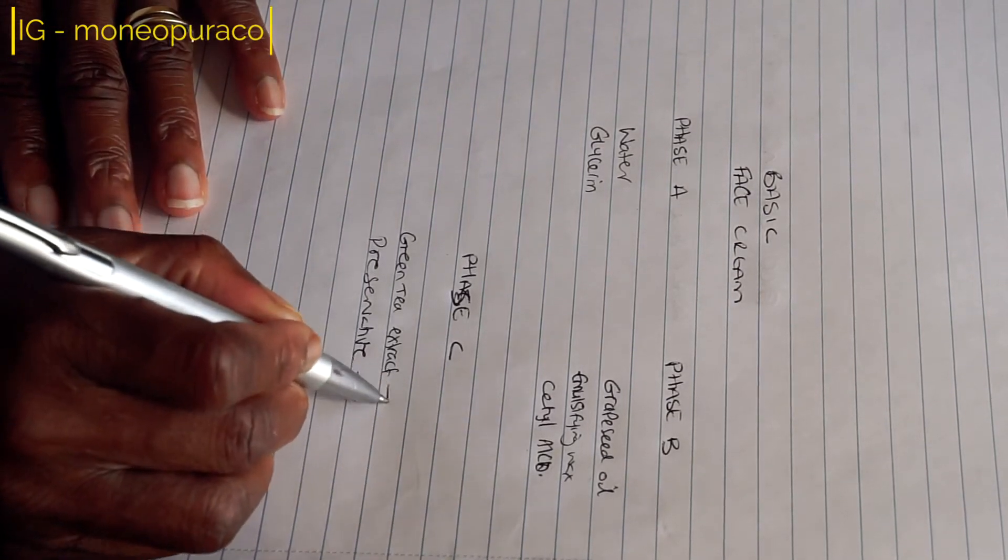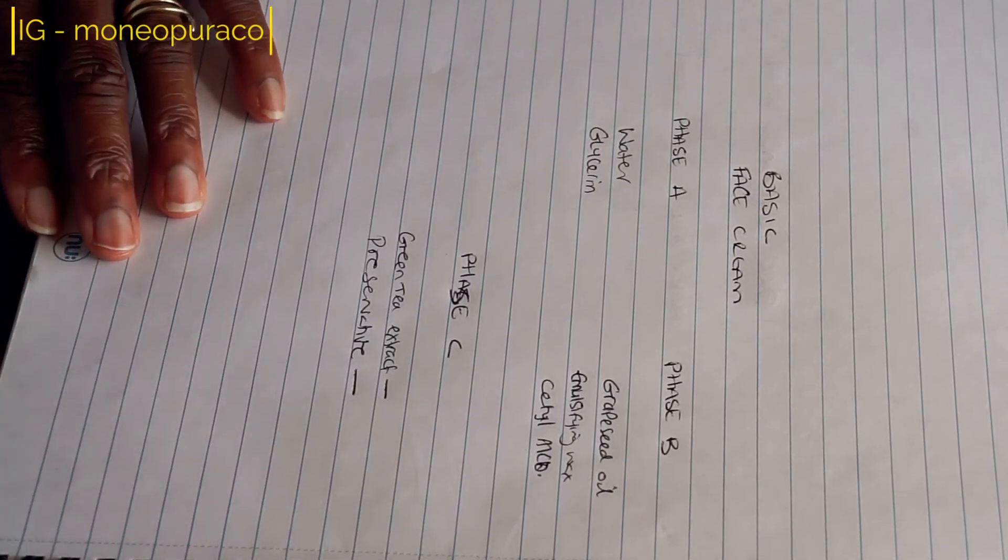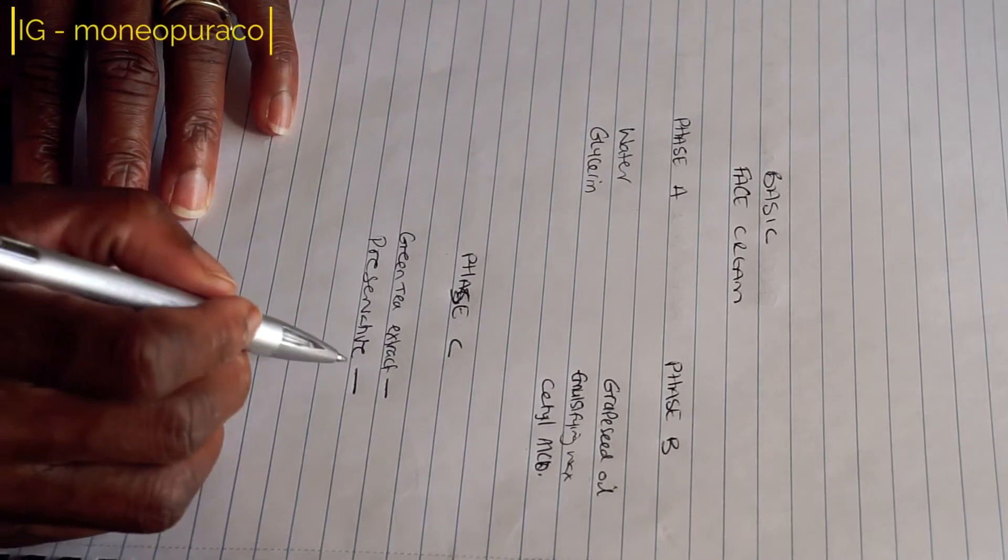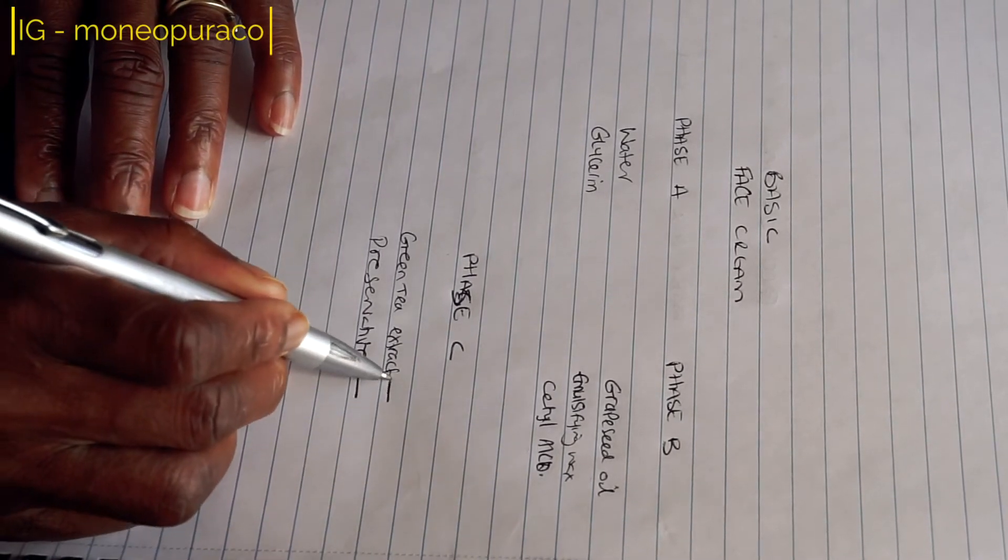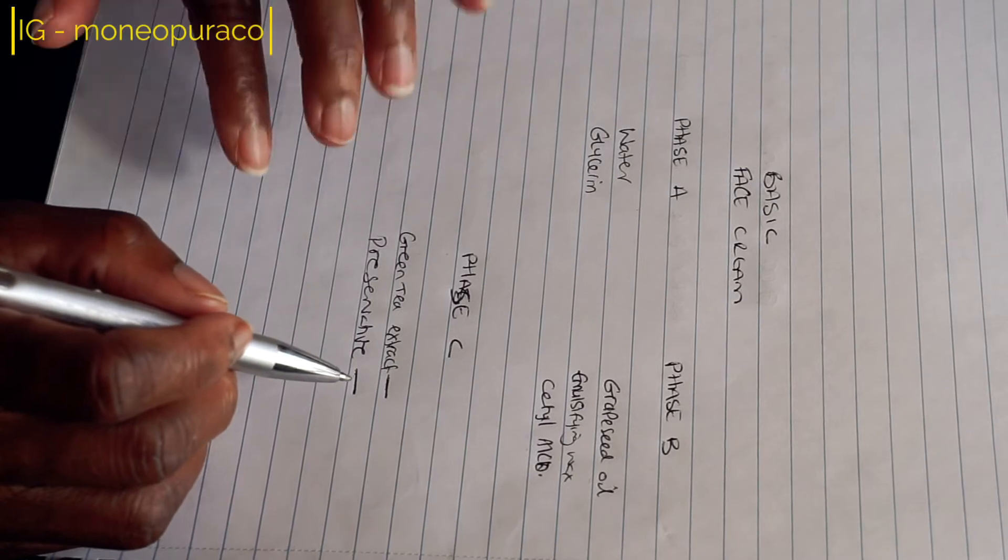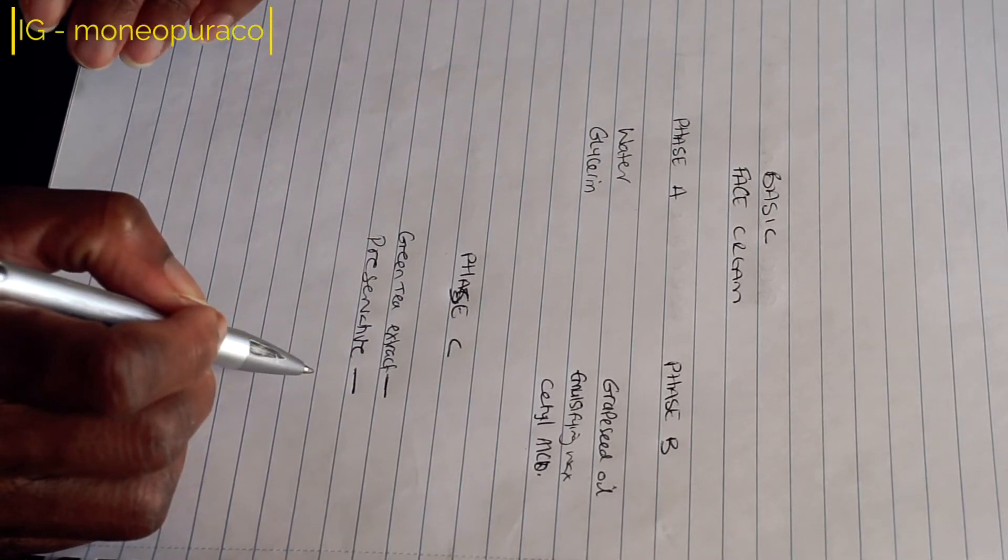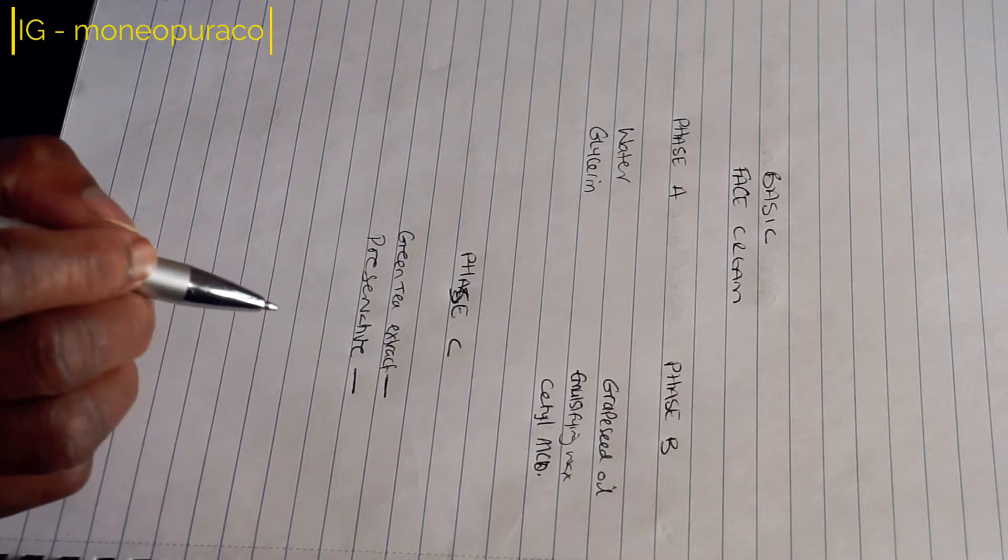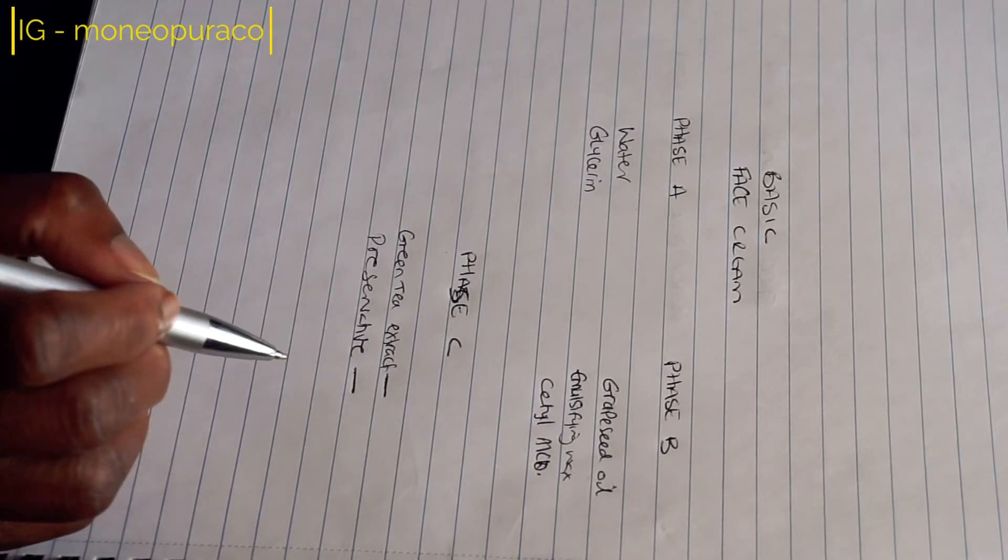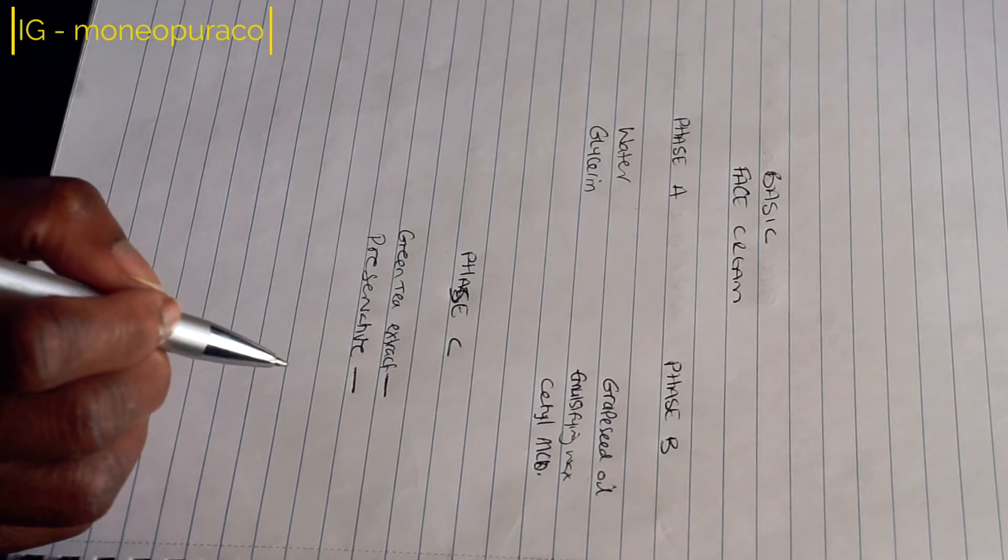Like I said earlier in my formulation video, always start with the cool down phase because the percentage usage range for those ingredients are usually lower than the water phase and the oil phase, which is phase A and B.